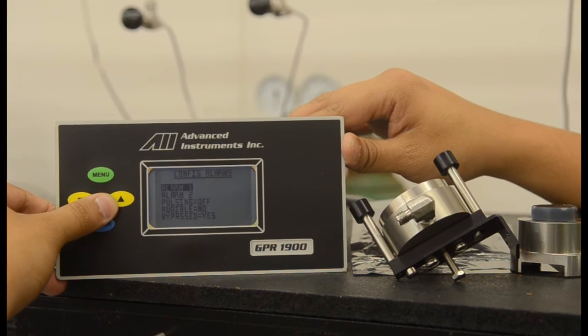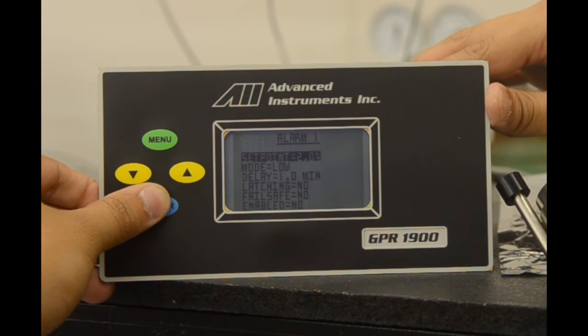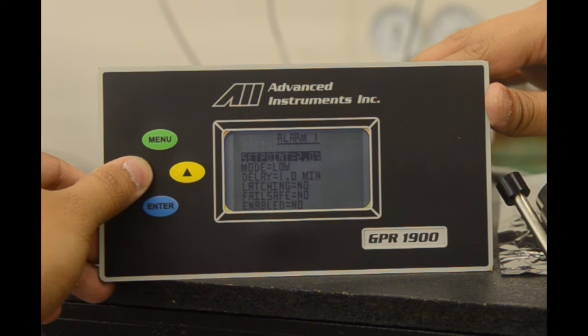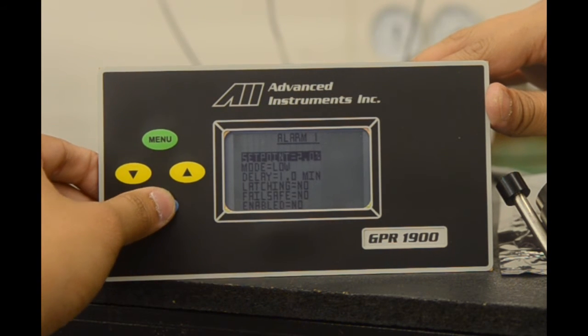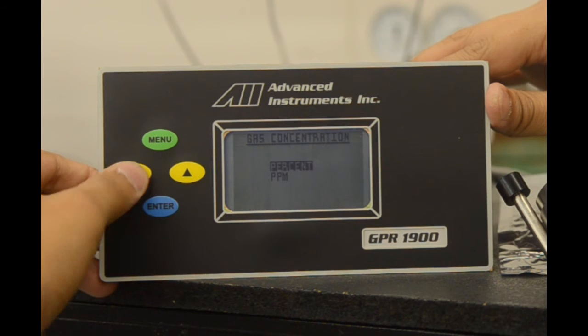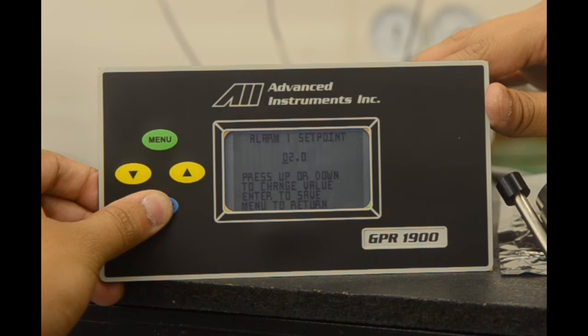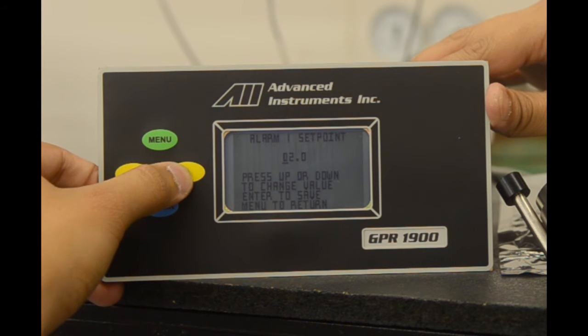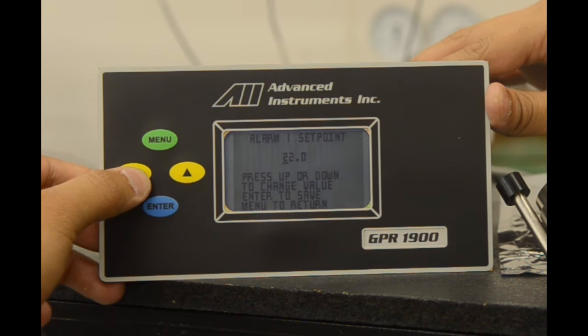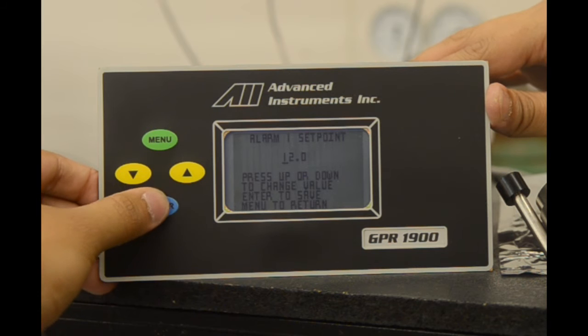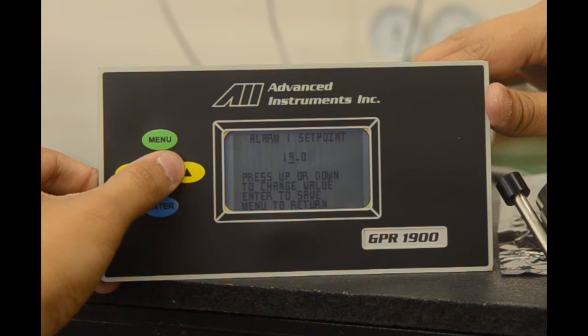We'll now configure alarm one. We select enter on alarm one and are taken to the alarm one set point menu. We will now set the set point. Select enter and you're brought to percent or ppm as an option. We will do percent. We select enter on percent and are taken to the alarm one set point menu. Here we can scroll up or down to change the value that the cursor is under. We will select 10%.